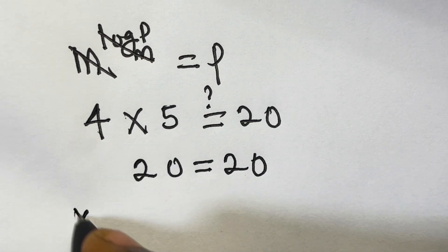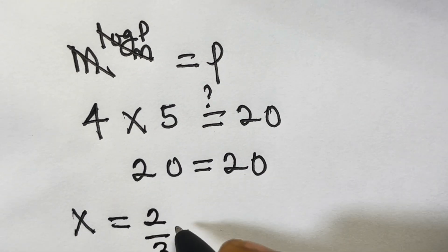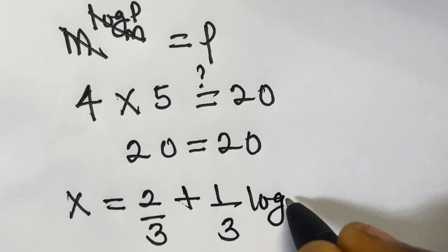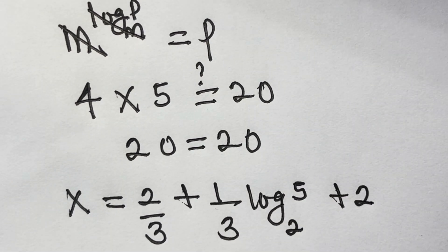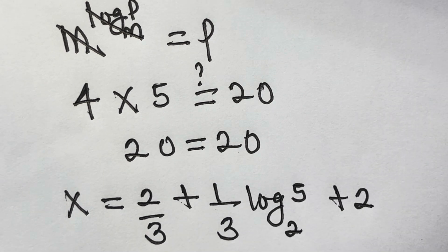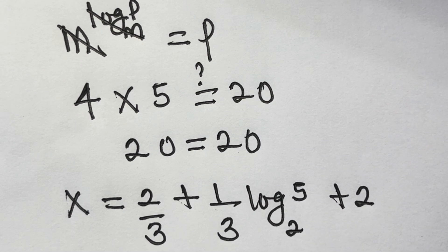So x equals 2 over 3 plus 1 over 3 log base 2 of 5, plus 2 satisfies the given equation 8 to the power x minus 2 equals 20. Thank you for watching. I hope you enjoyed this video. Please kindly like, leave a comment, share with your friends, and subscribe to my channel to stay updated on my next video. Bye.